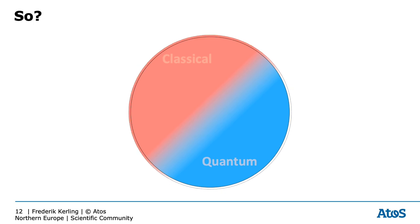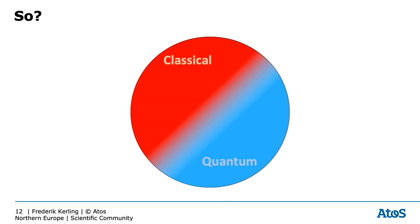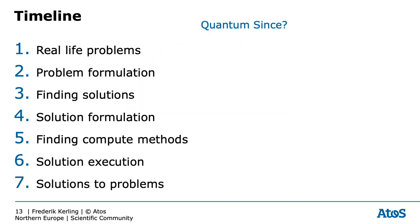It is interesting to look at how long we've been doing these things in a classical way and for how long we've been doing it in a quantum way. Firstly, real-life problems have existed in quantum for, let's say, the beginning of the universe — about 13.8 billion years ago. Problem formulation is not really done yet in a quantum way; it's a question mark, because right now it's unclear exactly how much problem formulation ever existed from a quantum formulation from the start. Finding solutions is strictly classical — we are human beings and we are limited to our classical brain and our classical interpretation so far.